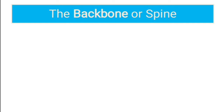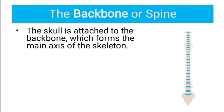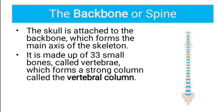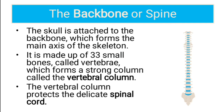The first part is the backbone or the spine. The skull is attached to the backbone which forms the main axis of the skeleton. It is made up of 33 small bones called vertebrae which form a strong column called the vertebral column. Remember that the vertebral column protects the delicate spinal cord which is inside it, so it is very important.